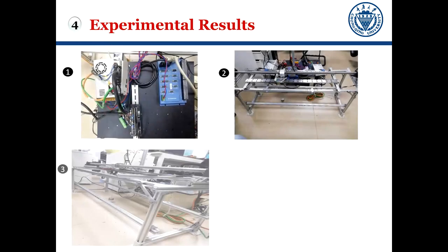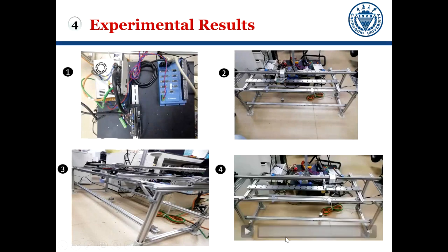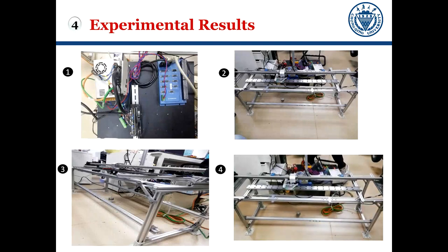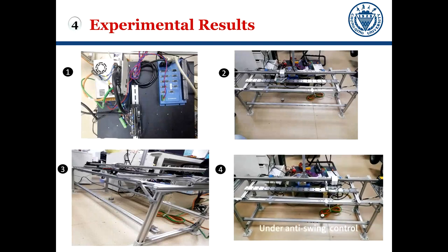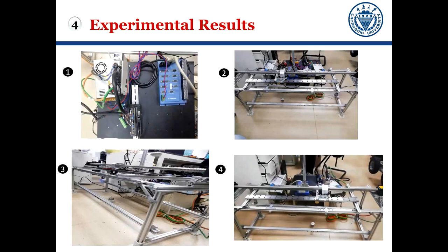In the experimental results section, the fundamental facilities of the handy crane system are given from Figure 1 to Figure 3, and an experimental video more clearly shows the effectiveness of the proposed scheme in comparison with threshold-based anti-swing control.